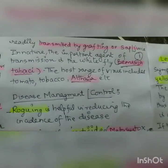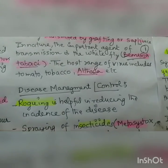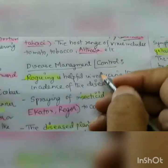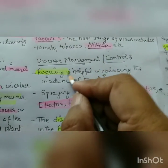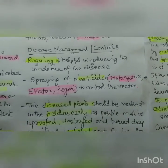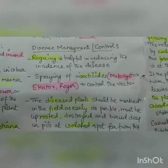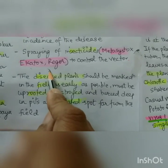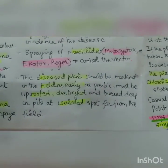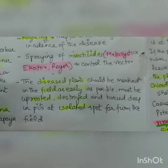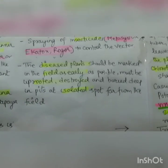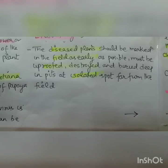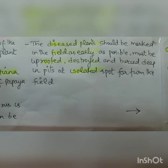Bemisia tabaci was also discussed when we did yellow vein mosaic of bhindi — a very important disease, please revise it. The host range of the virus includes tomato, tobacco and okra. Disease management: rouging — field sanitation — involves collection of all diseased plants and burning them away from the field. When Bemisia tabaci is present, spray Metasystox, Ecatox 0.2%, or Rogor 0.05%. Diseased plants should be marked and uprooted as early as possible, destroyed and buried deep in pits at isolated spots far away from the field.